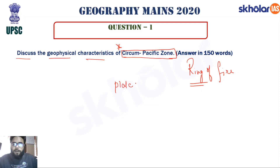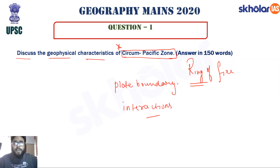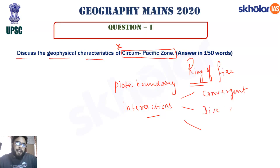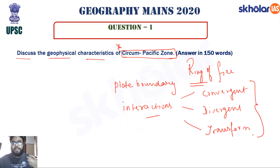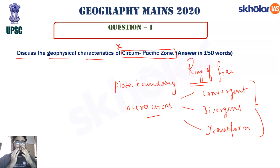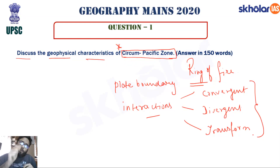There are three types of plate boundary interactions: convergent boundary, divergent boundary, and transform boundary. For this question on the Circum-Pacific Zone, you need to specify in which portion we see each type of boundary interaction — convergent, divergent, and transform.